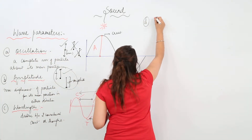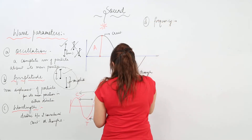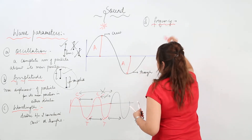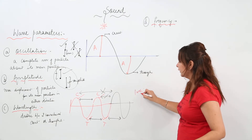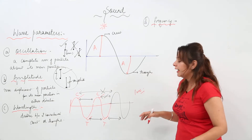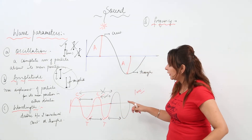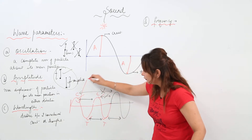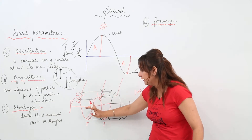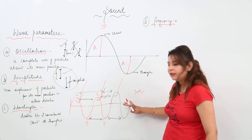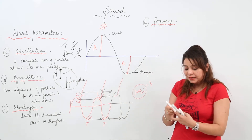The next parameter is frequency. What is frequency? Suppose I fix the time to one second and see how many waves are produced in that given second. Suppose I find a graph like this — it comprises one wave, another wave, another wave, another wave, because one wave consists of one crest and one trough. So the number of waves produced in one second is the frequency — here it is 3.